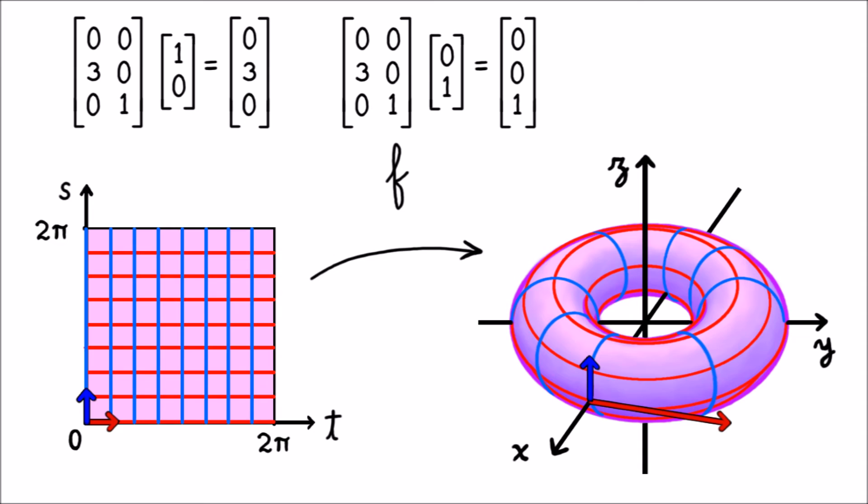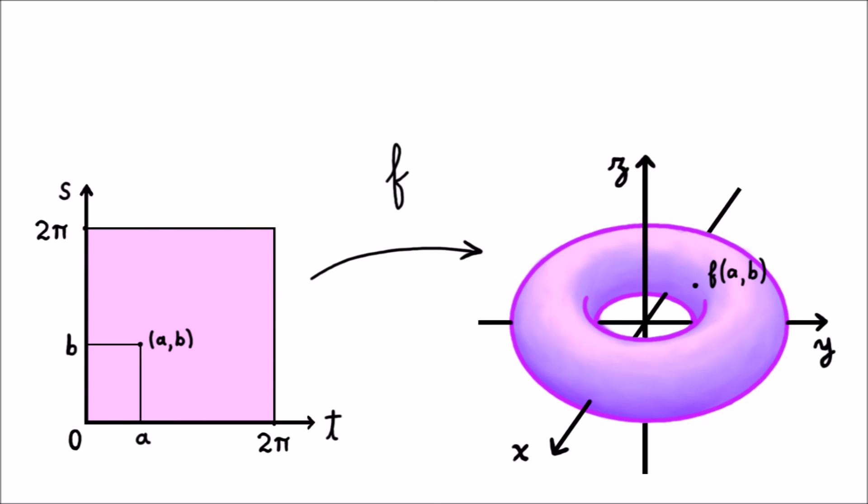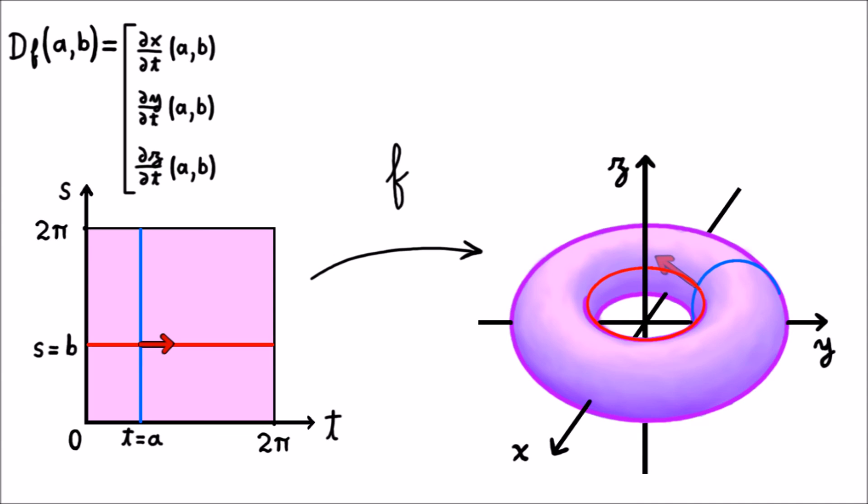We can do this for any point in the square. If we pick a point on the square, call it (a, b), we get one parametrized path in space by setting s equal to b. This path traces out the horizontal circle that passes through the point f(a, b). When we differentiate f with respect to t, and then plug in a and b for t and s, we get the velocity vector of this path right as it passes through the point in question. If we instead let s vary and set t equal to a, we get a different parametrized path, this time tracing out the vertical circle that passes through f(a, b). When we differentiate f with respect to s, and then plug in a and b, we get the velocity vector for this second path as it passes through our point.